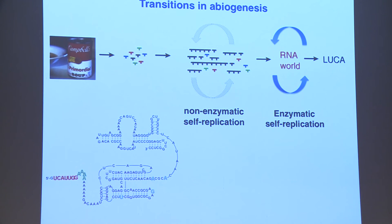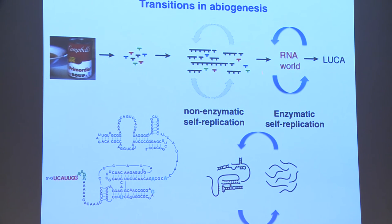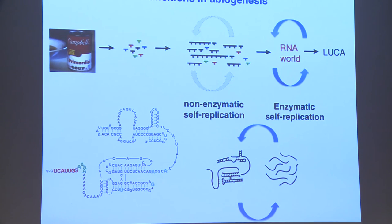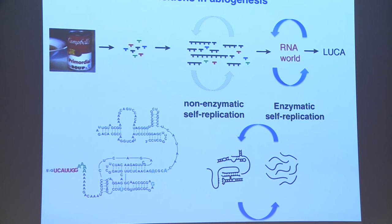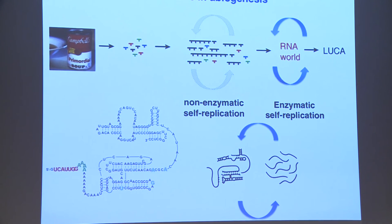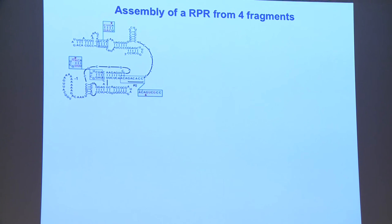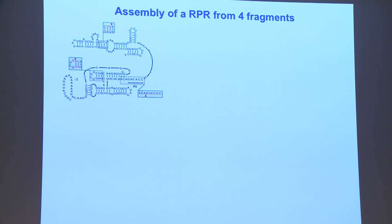One question we asked: wouldn't it be possible to have an intermediate replication stage where RNA transitions between pools of short oligomers and fully assembled complex ribozymes? This would also make the replication task easier, because short oligomers would be unstructured and therefore easier to replicate by the ribozyme. So we wondered: can we assemble the ribozyme from its pieces?